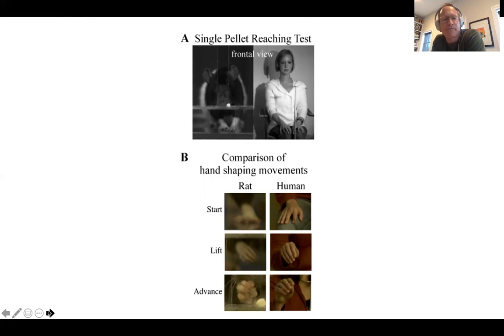Here we're showing that you can actually investigate reaching in rodents, just like in humans. They can start by resting their paw, then lift and advance their hand or paw — this is called homology at the level of behavior, and a good case has been made for homology of prehension in rodents and humans. You can see the rodent trying to reach out to pick up a pellet. They prefer to use their mouth and have to be trained to pick the pellet up, getting better and better over time.